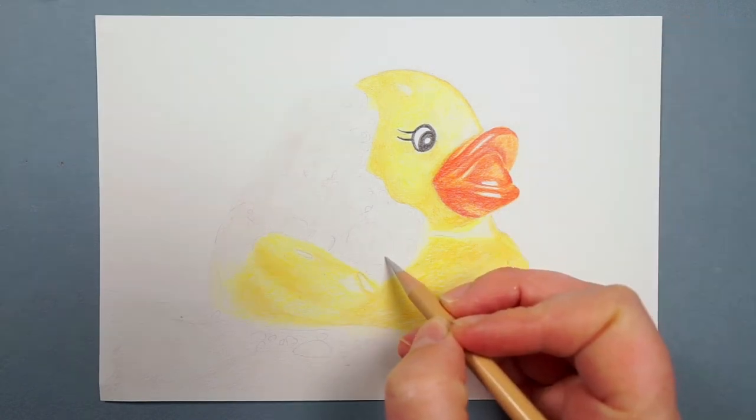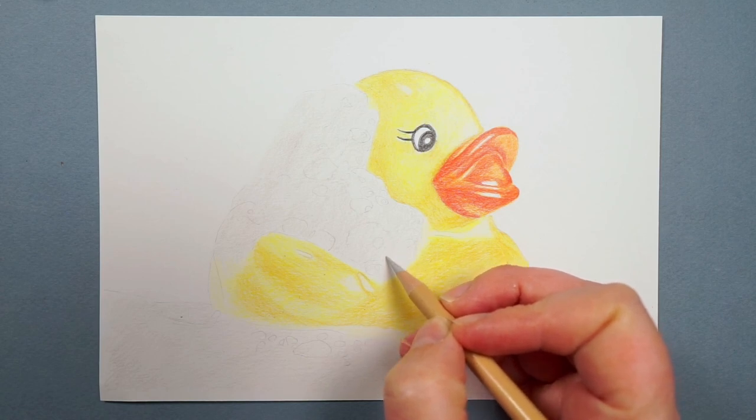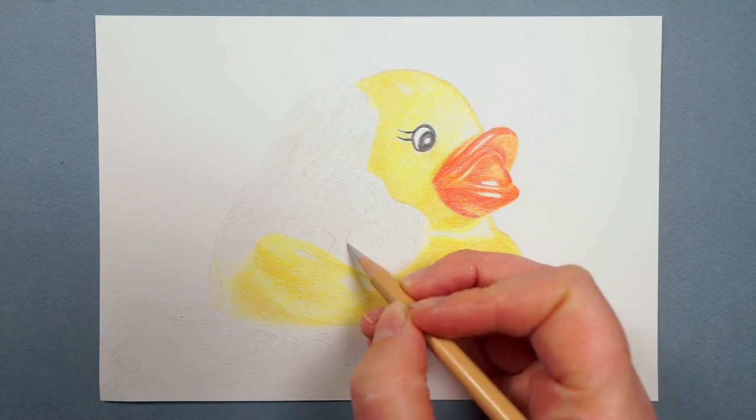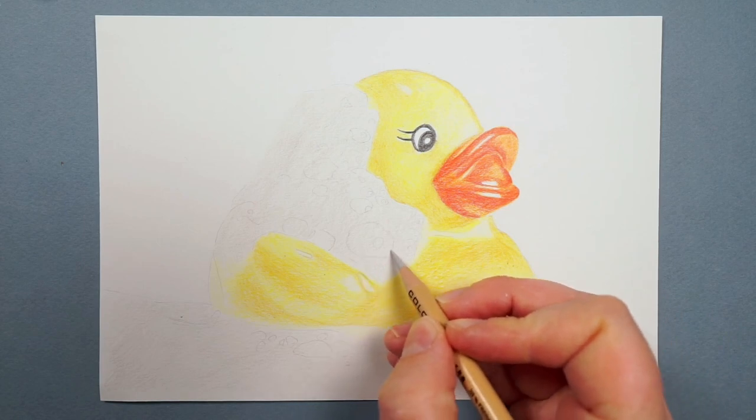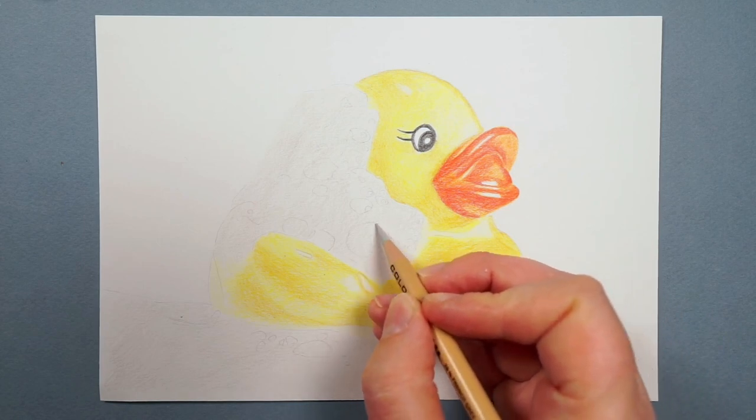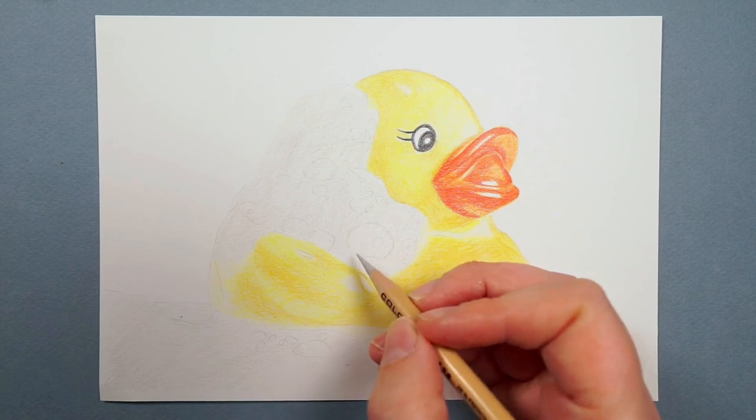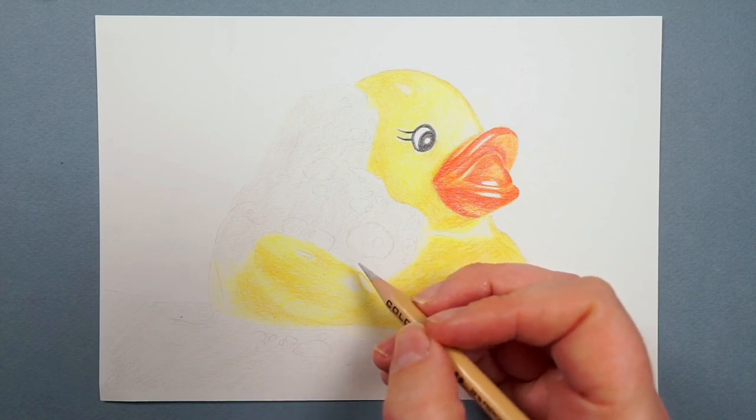And then at this point, I would say that I've got a lot of the duck very well marked out except for the bubbles. Now we already have our very lightest base layer on the bubbles. What I want to do now is begin marking out all of the shapes, very similar again to what we did with the duck's beak and the duck.